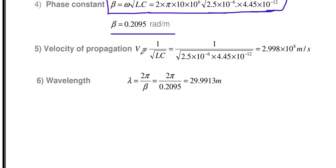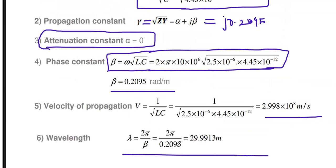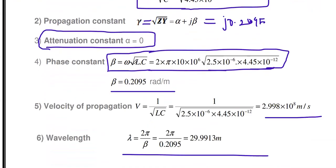Velocity of propagation: v = 1/√(LC) = 2.998×10⁸ m/s, approximately 3×10⁸ m/s — the velocity of light in air. Wavelength: λ = 2π/β = 2π/0.2095 = 29.9913 meters. For this zero dissipation line, G = 0 and R is negligibly zero, so these simplified formulas apply.